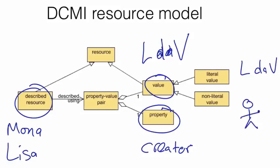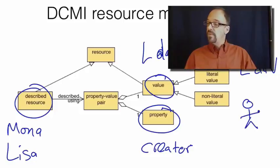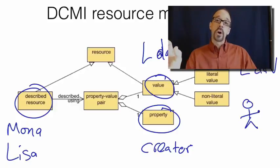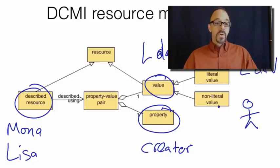The point here is that the property-value pair is two things. It is the property, or the element, and the value that is assigned to that property. And the value is also two things. It is the term that is used as the value, and it is the thing that the term refers to.